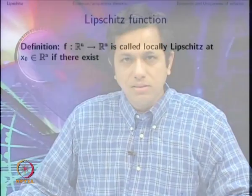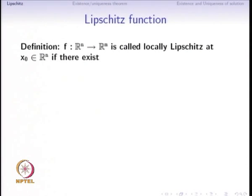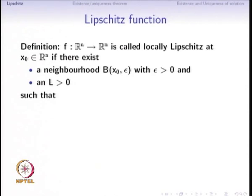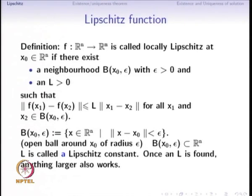Welcome to lecture number 4 of Nonlinear Dynamical Systems. We had just begun seeing what a Lipschitz function is, so let us recapitulate the definition. A function f from Rn to Rm is called locally Lipschitz at a point x0 in Rn if there exists a neighborhood — a ball centered around x0 with radius epsilon greater than 0 — and some constant L such that the Lipschitz inequality is satisfied for all points x1 and x2 in that neighborhood of x0.